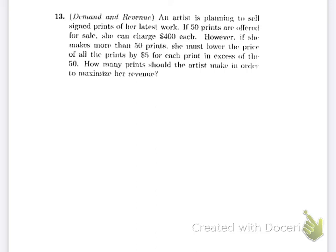The next problem is demand and revenue. An artist plans to sell signed prints: if 50 prints are offered she can charge $400 each. However, if she makes more than 50 prints she must lower the price of all prints by $5 for each print in excess of 50. So at 51 prints the price drops to $395. This gives us two coordinate pairs to build the demand equation: (50, 400) and (51, 395).